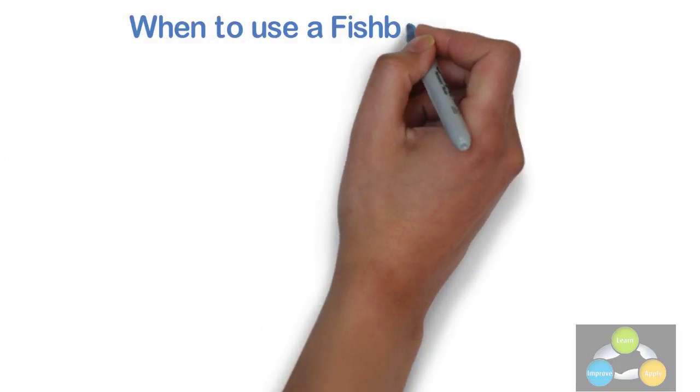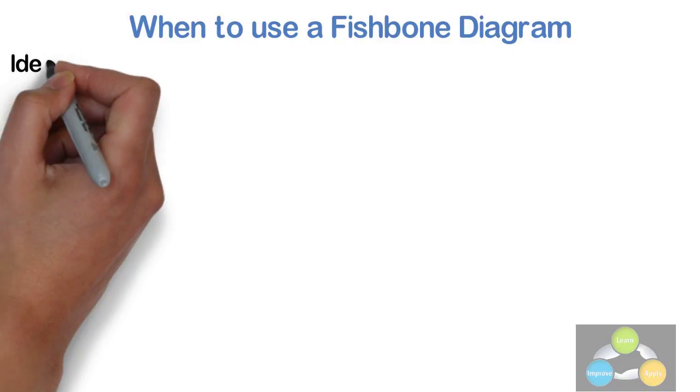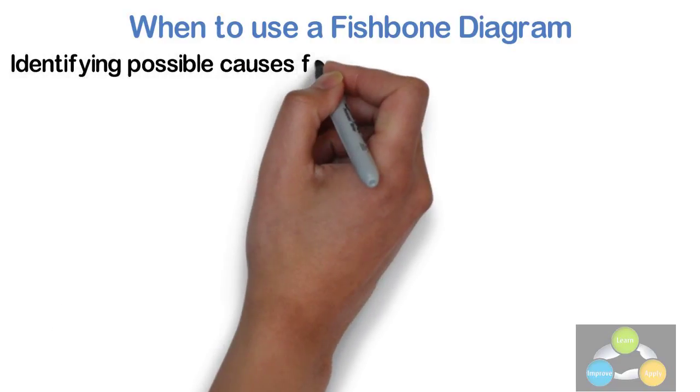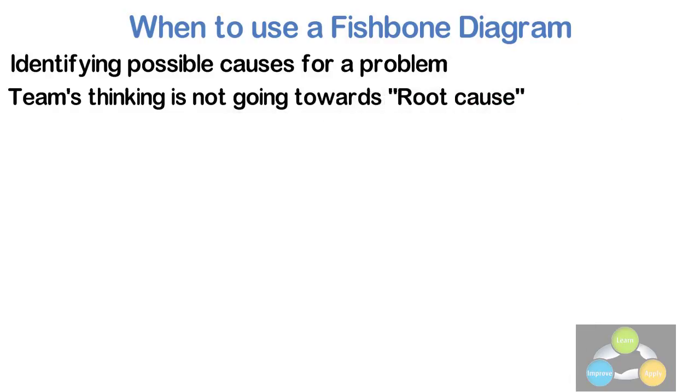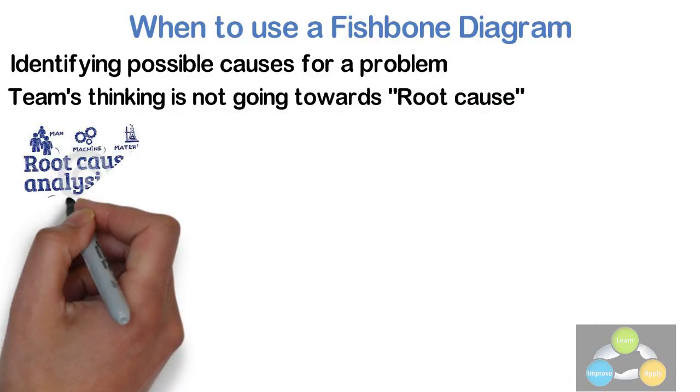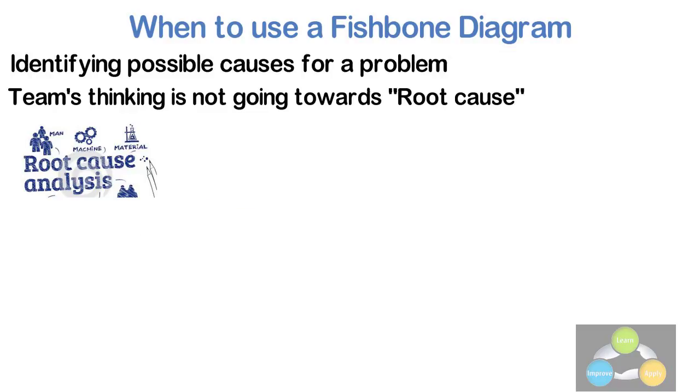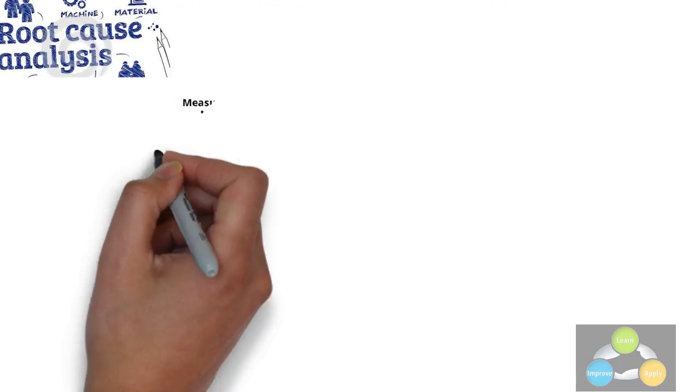When to use a fishbone diagram? When identifying possible causes for a problem, especially when a team's thinking is not going towards a root cause. Root cause analysis is intended to reveal key relationships among various variables and the possible causes provide additional insight into process behavior.